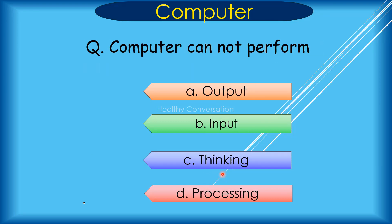Question: A computer cannot perform A. Output, B. Input, C. Thinking, D. Processing. Correct answer is C. Thinking.